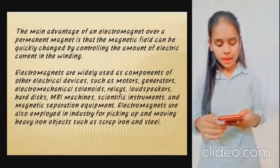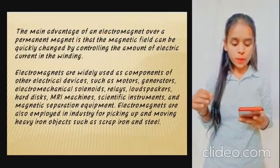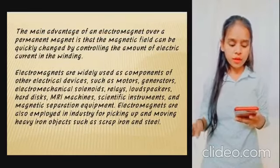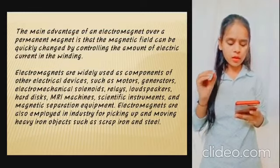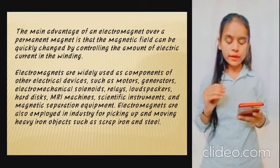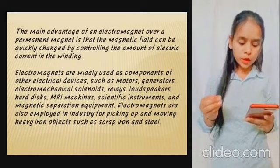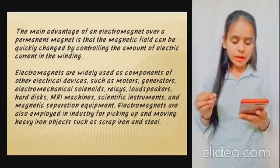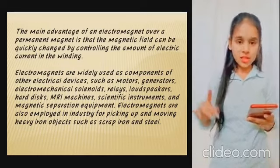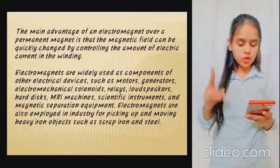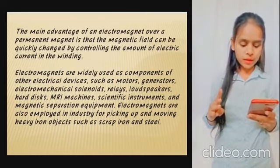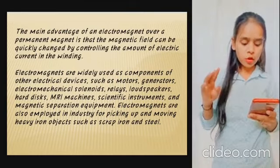The main advantage of electromagnets over permanent magnets is that the magnetic field can be quickly changed by controlling the amount of electric current in the winding. Electromagnets are widely used as components of other electric devices such as motors, generators, and electromagnetical solenoids.